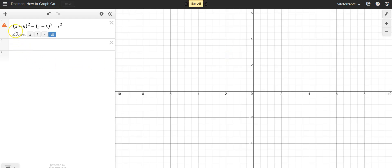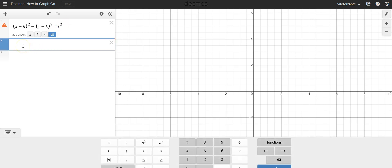The equation for a circle is the following: x minus h quantity squared plus y minus k quantity squared is equal to r squared. Now let's talk a little bit about what these numbers mean.